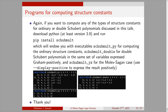I'll end with an advertisement for my program. If you download Python 3.9 or higher and run pip install shubmult, that gives you: shubmult_py for computing ordinary structure constants, shubmult_double for double Schubert polynomials in the same set of variables expressed Gram-positively, and shubmult_yz for the Molev-Sagan case. I recently added a feature that allows you to display the result positively, though it does not do that by default. Thank you to the organizers and thank you all for attending.